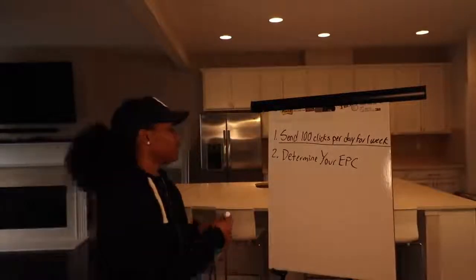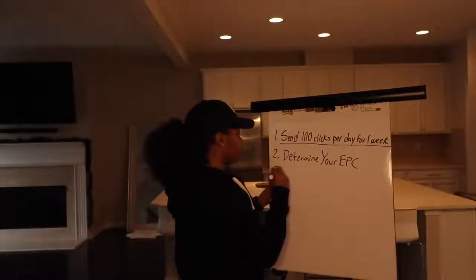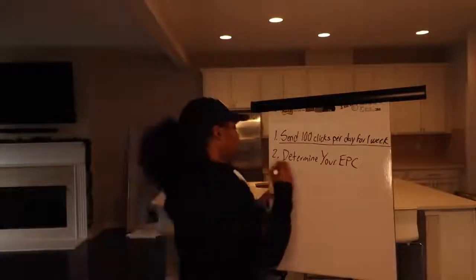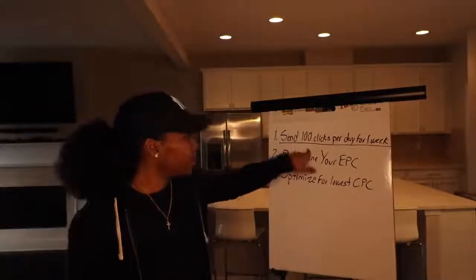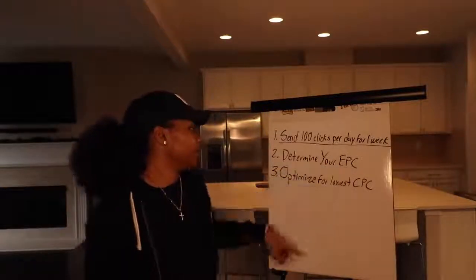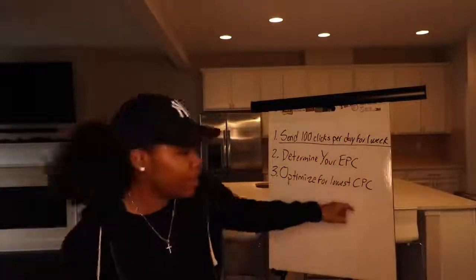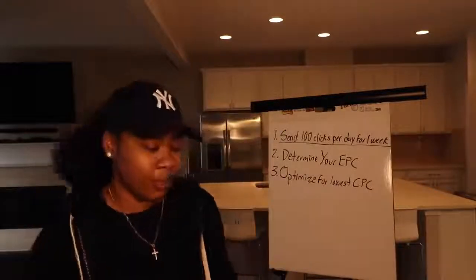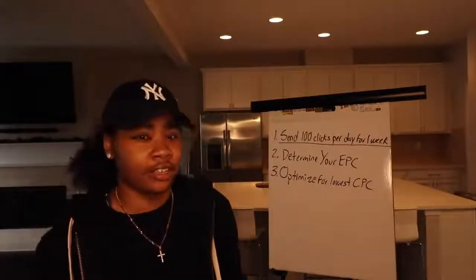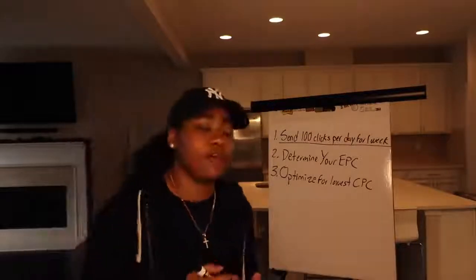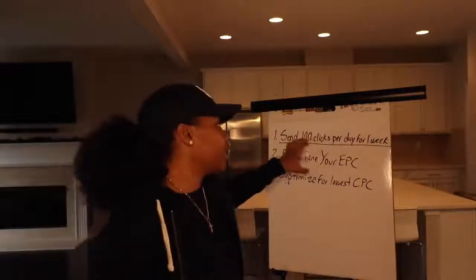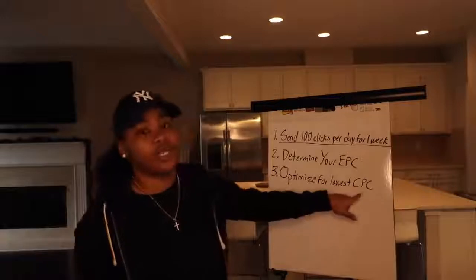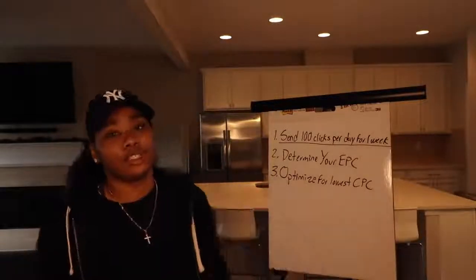After you get that number, step three is you want to comb through your data and optimize for lowest CPCs. If you're in Facebook ads, for example, and you're sending 100 clicks per day for one week, after that week you're going to know your EPC but you'll probably be paying a higher CPC during that first week. Your page might be brand new, you're dialing in, testing different targeting options. So everything is not going to be optimized in this first week. After sending this traffic, it won't reflect the true potential of the campaign unless you start optimizing for your lowest CPC and figuring out how much your clicks are costing you.